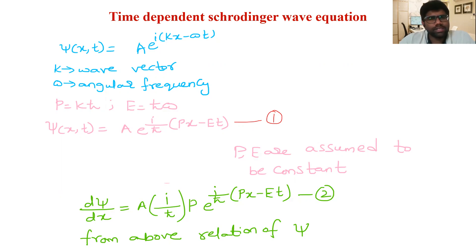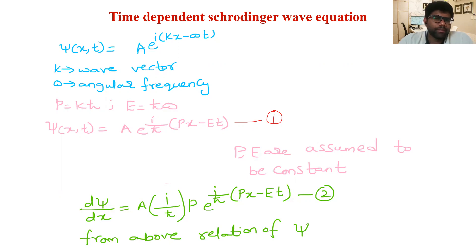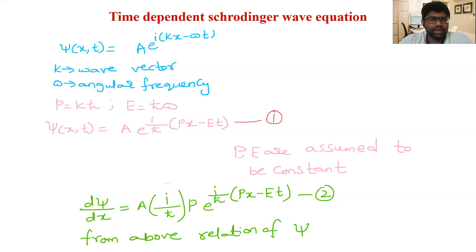Now when we replace k and ω with p and E, ψ(x, t) becomes A·e^(i/ħ)(px − Et). Here we are taking p/ħ and E/ħ outside, and this will be referred to as equation 1.